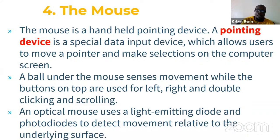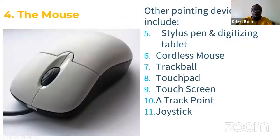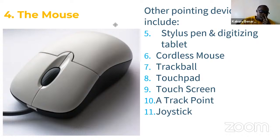Some mice have a ball underneath to sense movement — the ball helps move the pointer left, right, or for scrolling. Then there are optical mice, which use a light-emitting diode and photodiodes to detect movement. You can see this mouse blinking; as it blinks, the computer senses the movement so you can click or move around. This particular mouse is wired, meaning a cable connects it to the system unit.